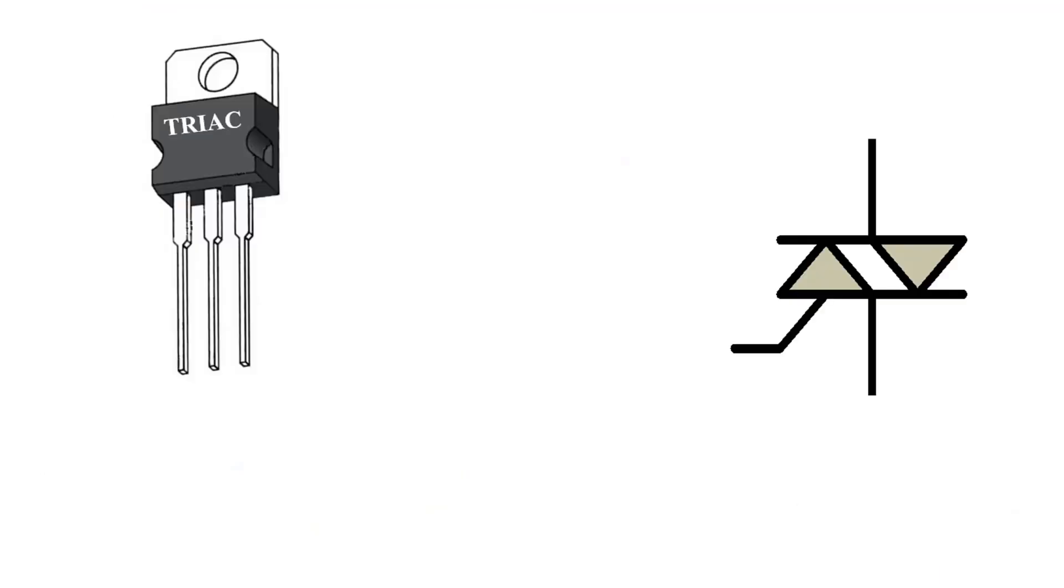You see the shape of a TRIAC on the left and its symbol on the right. TRIACs also have three pins. One of them is main terminal 1, the other is main terminal 2, and the last is gate.